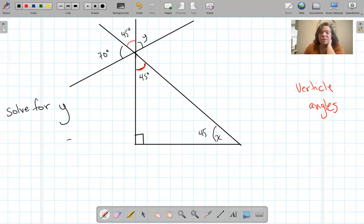So I just add 70 plus 45 plus Y equals 180. And that's all you have to do is solve for Y. And that's your answer.